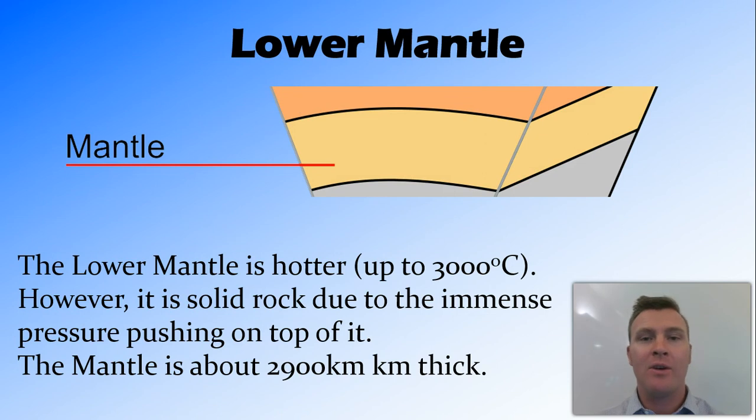Below the upper mantle, we have the lower mantle, which I suppose makes sense. And it again is quite hot. In fact, it's much hotter. It gets up to about 3,000 degrees. And it's a little bit cooler at the top, a little bit hotter at the bottom. And it, even though it's so hot, is no longer that soft plastic rock. Because of the immense pressure, and this pressure comes from basically all the earth sitting on top of it. It is under so much pressure that it cannot actually form a liquid, and is a solid.